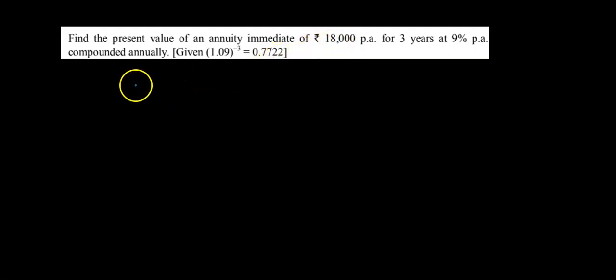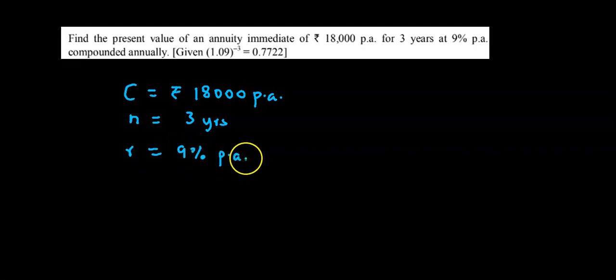Here we have the installment C per annum is Rs.18,000 per annum, time period is 3 years, so n equals 3 years. Rate of interest is 9% per annum, so in decimal form i equals r upon 100, so i's value is 0.09.